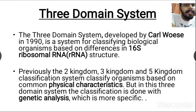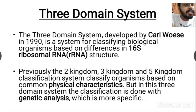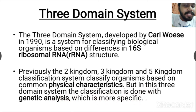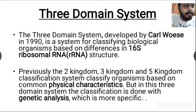Previously used classification systems include the two kingdom, three kingdom, and five kingdom classification systems. These earlier systems classified organisms based on physical characteristics, but the three domain system uses genetic analysis, which is more specific and more convenient for classifying living organisms.